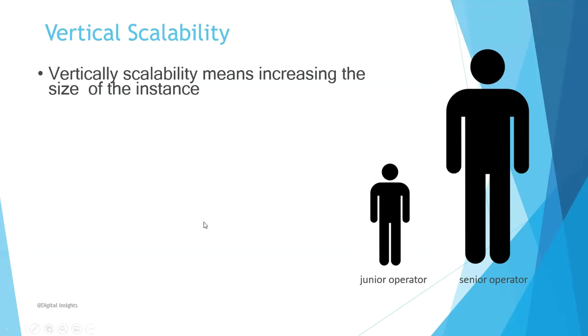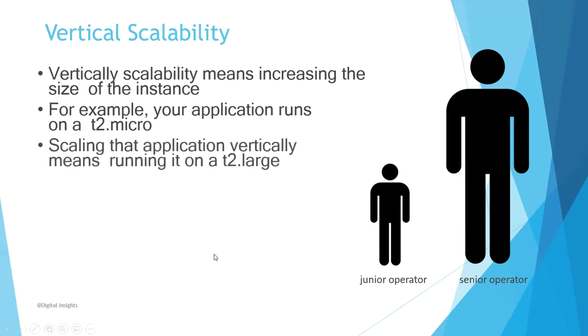For example, your application runs on a t2 micro. Scaling that application vertically means running it on a t2 large. This can be done simultaneously without any outage.